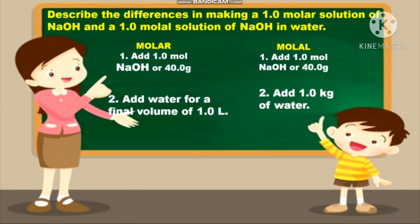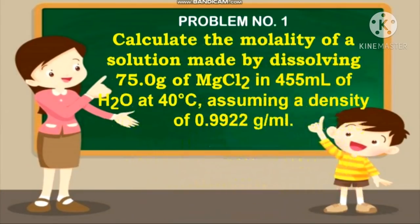Molarity is moles of solute per 1 liter of solution, which incorporates both the solvent and the solute. Molality, instead, is per kilogram of whatever you are dissolving your solute into — the solvent only. For the given problem: calculate the molality of a solution made by dissolving 75.0 grams of magnesium chloride in 455 mL of H₂O at 40 degrees Celsius, assuming a density of 0.9922 grams per mL.